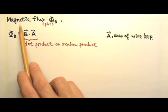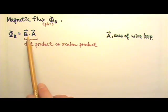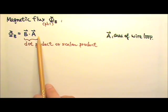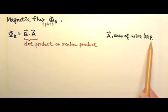Now let's look at what magnetic flux is. Magnetic flux φ_B is B dot A, where B is the magnetic field and A is the area of the wire loop.